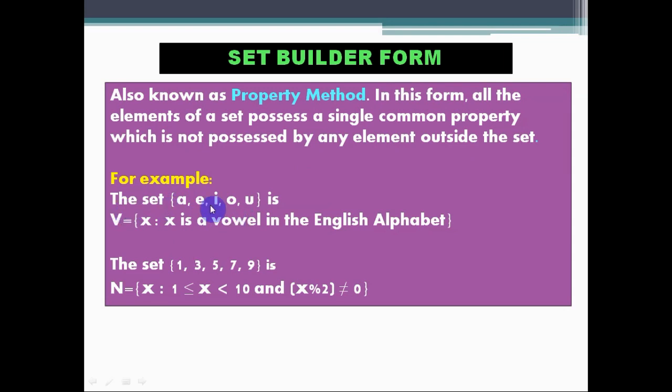Let's see an example. The set {a, e, i, o, u}, let's see how we can write this in set builder form. We can write this as capital V equals to {x such that x is a vowel in the English alphabet}. Since all these elements are from the English alphabet and their property is that all these elements are vowels, we can write it this way. That means all these elements relate to a common property which is vowel in the English alphabet.